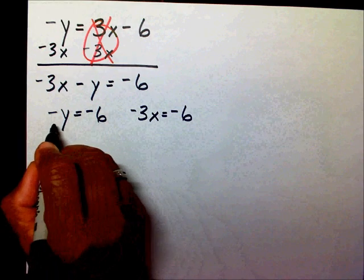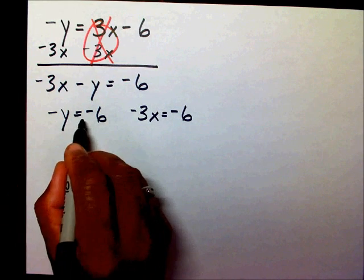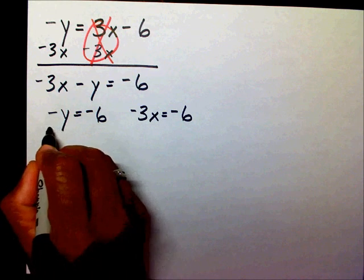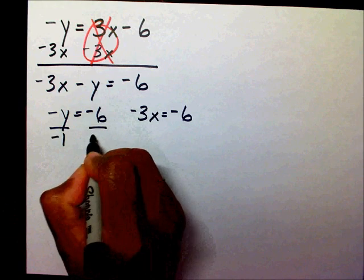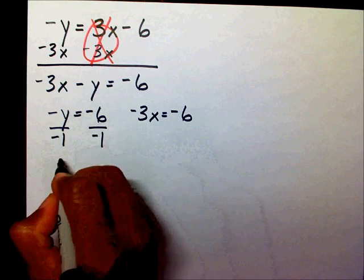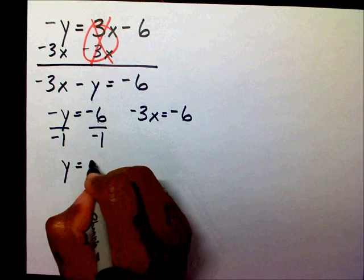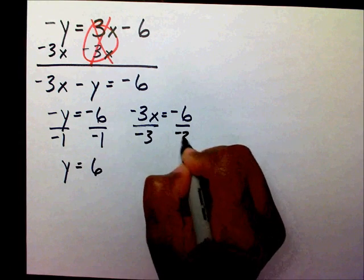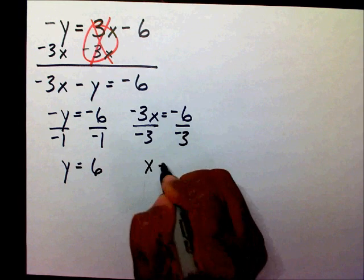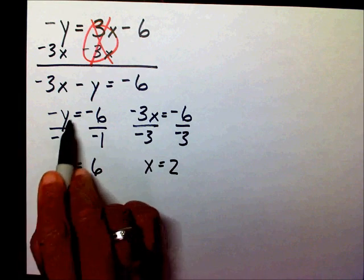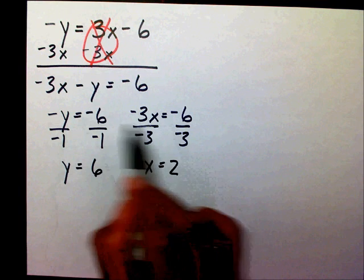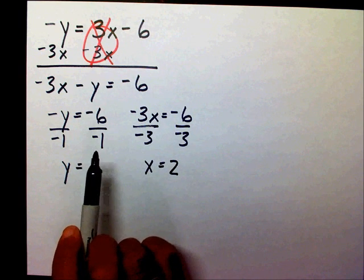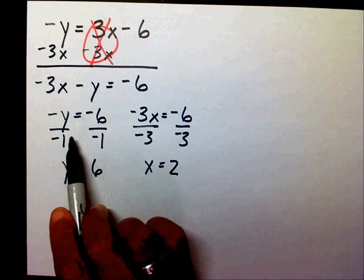For my y, I need to get rid of this negative, so I'm going to divide both sides by negative 1. That gives y equals 6. And I'm going to divide both sides by negative 3, giving x equals 2. If you don't understand this process, please watch the video on solving equations and I'll go through in detail on why I'm able to do this.